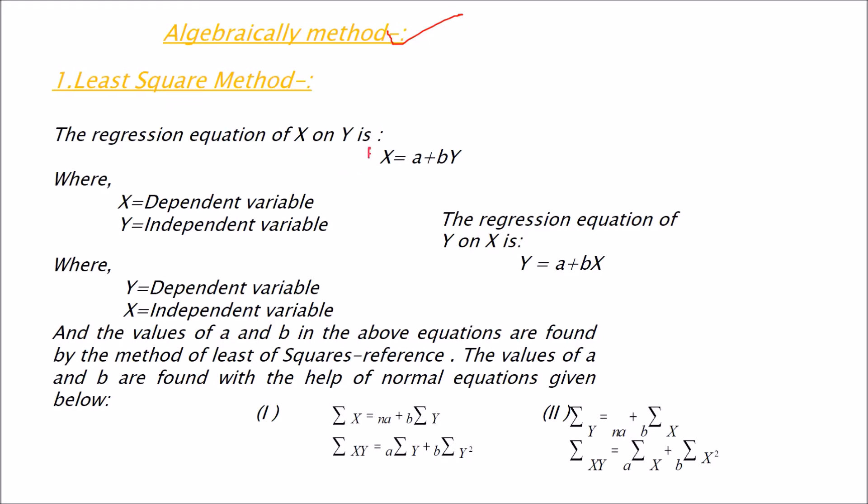Let us take first, before going into the actual example, what exactly means this algebraic method? First is the least square method. So the regression equation is like this: X is equal to A plus BY. Y is here the independent variable because you can place any value here. But X is totally dependent on A, B and Y.